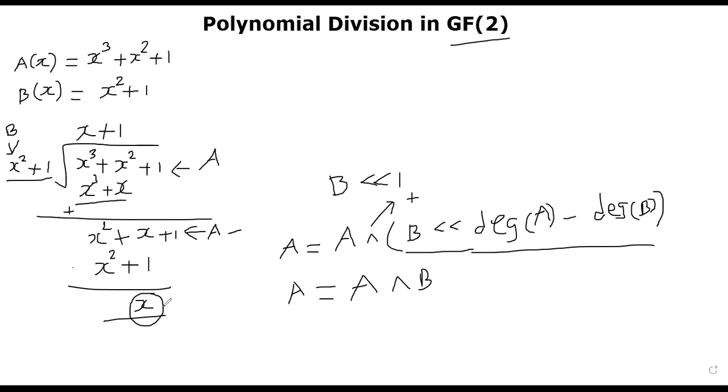But now you look at degree of A. Degree of A is 1. But degree of B is 2. That means you can stop. So you can continue this process until the new A's degree is greater than or equal to degree of B. As soon as the new A's degree is less than the degree of B, you're done. That's how you define the division of a polynomial in GF of 2.